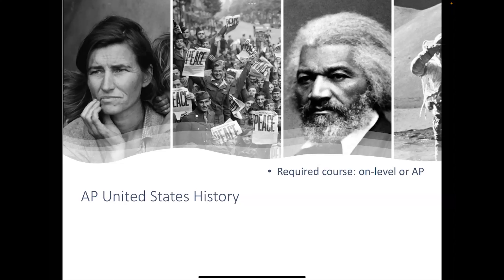If you opt to take AP, then you will take a test in May that, if you pass, will give you six hours of college credit, which basically translates to two college courses.